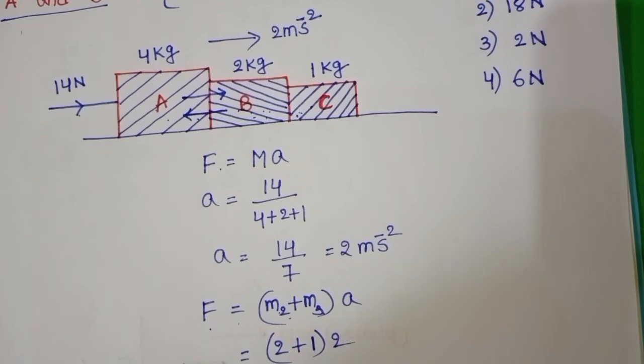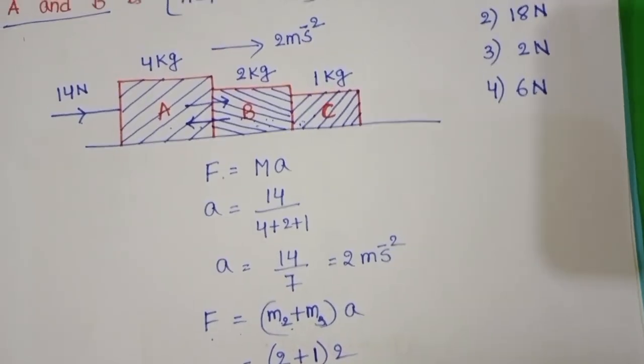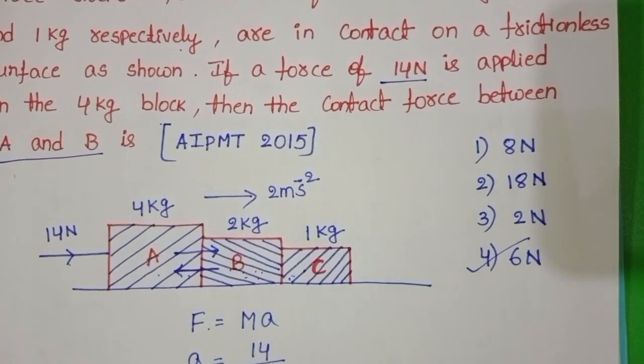3 times 2 equals 6 N of force. The contact force between A and B is 6 N. Fourth option is correct.